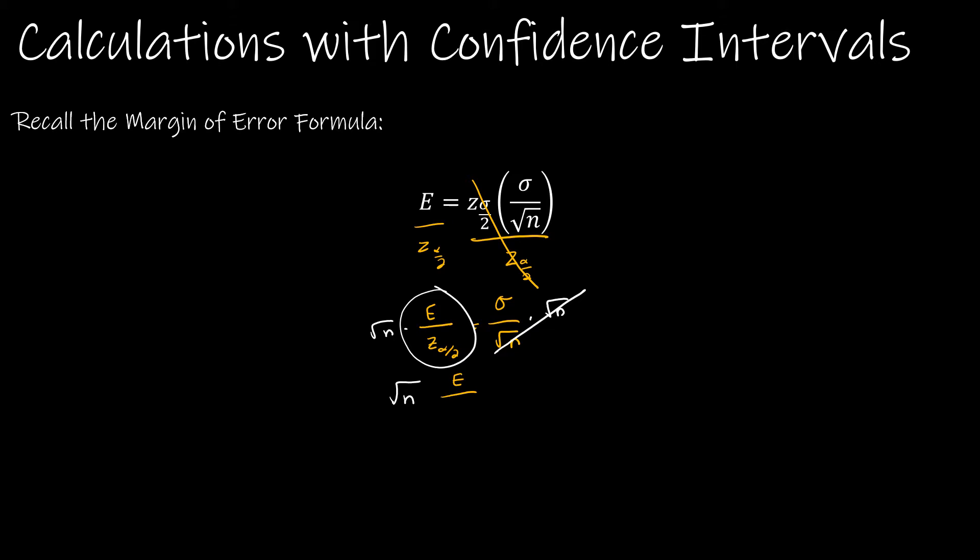So I have E over Z alpha over 2. And then on this side, I just have sigma. So now what I'm going to do is I'm going to multiply each side times Z of alpha over 2 divided by E.